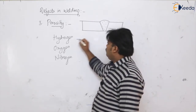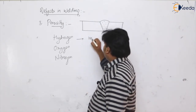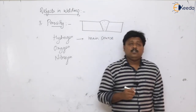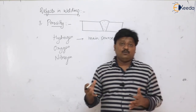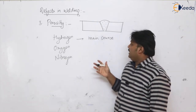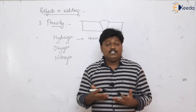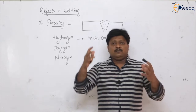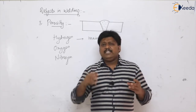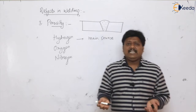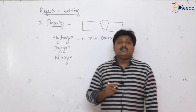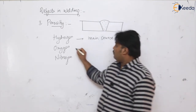Hydrogen is the main source of porosity. This is because coatings like cellulose coatings contain a lot of hydrogen. Water dissociation also contributes hydrogen. If the electrode wire is drawn from wire drawing operations, any lubricants present on the wire are sources of hydrogen, which causes severe porosity in the weld.